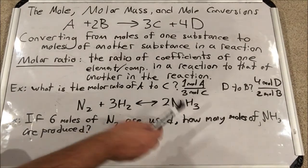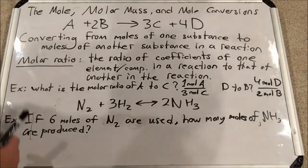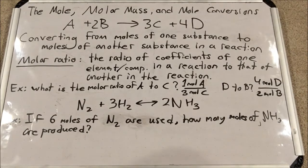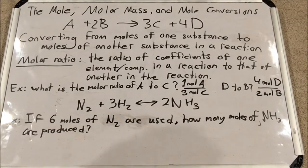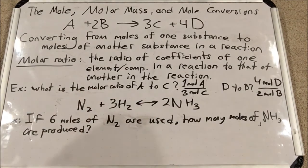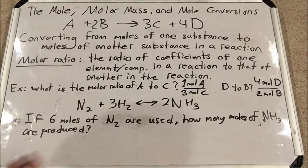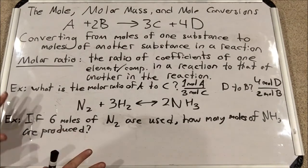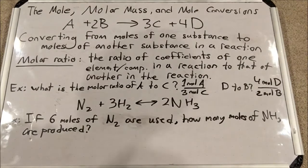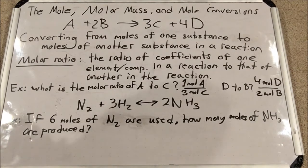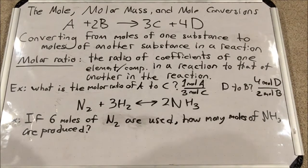Let's look at a real reaction — the Haber process, the production of ammonia — with a balanced reaction. The yield sign goes both ways because it's reversible, but we'll just think about it going forward. If six moles of N2 are used in this Haber process, how many moles of NH3 are produced? We'll use the molar ratio to solve this — note that mass is not involved at all.